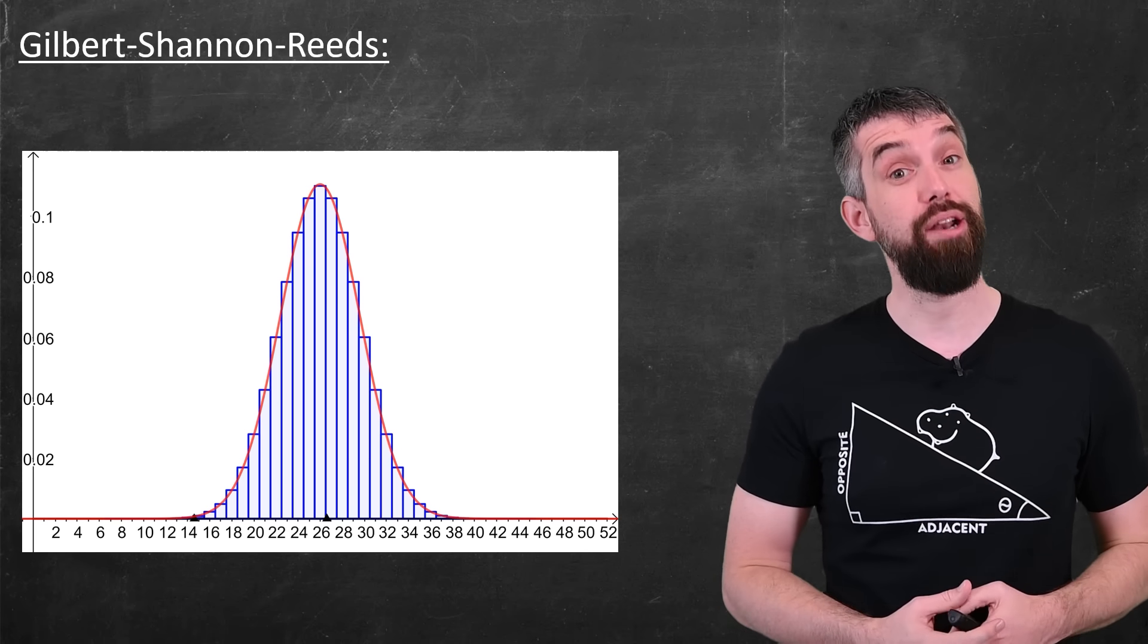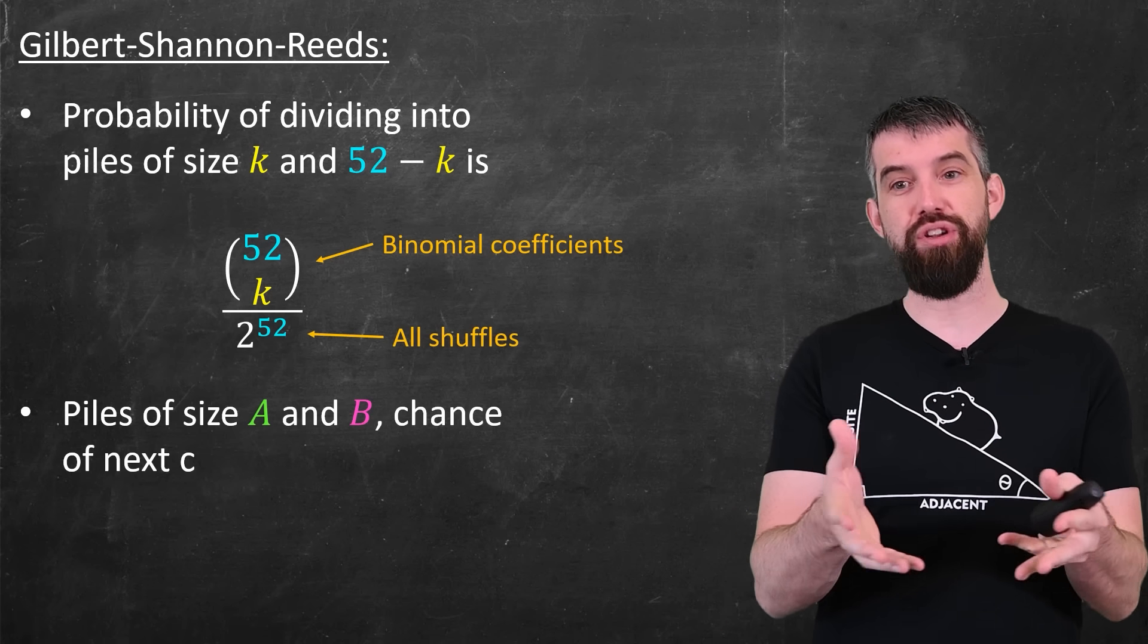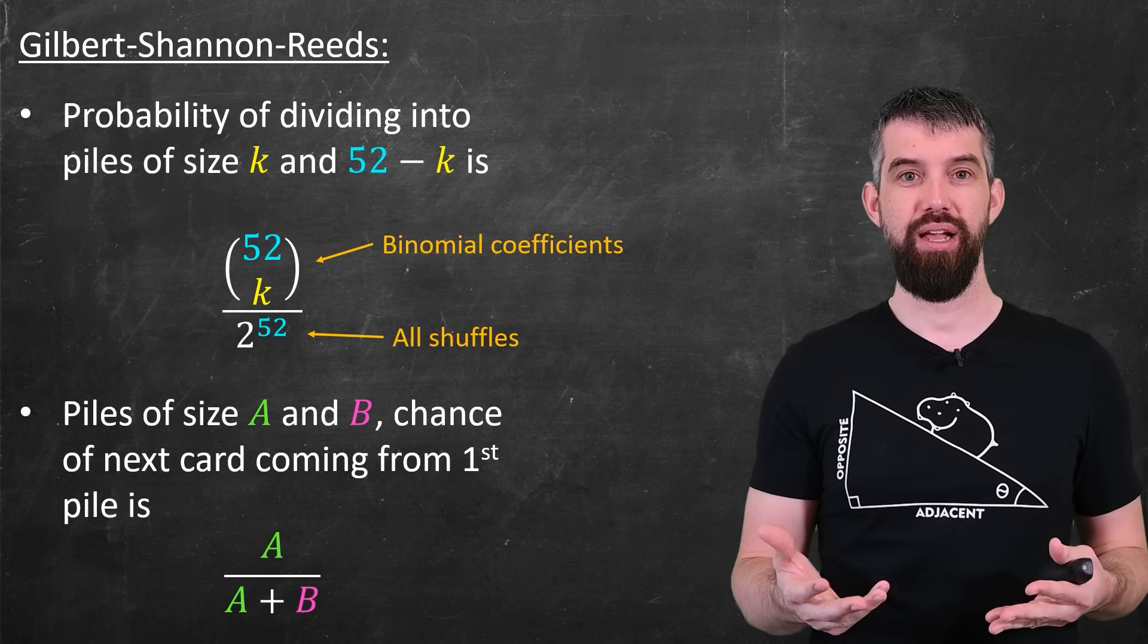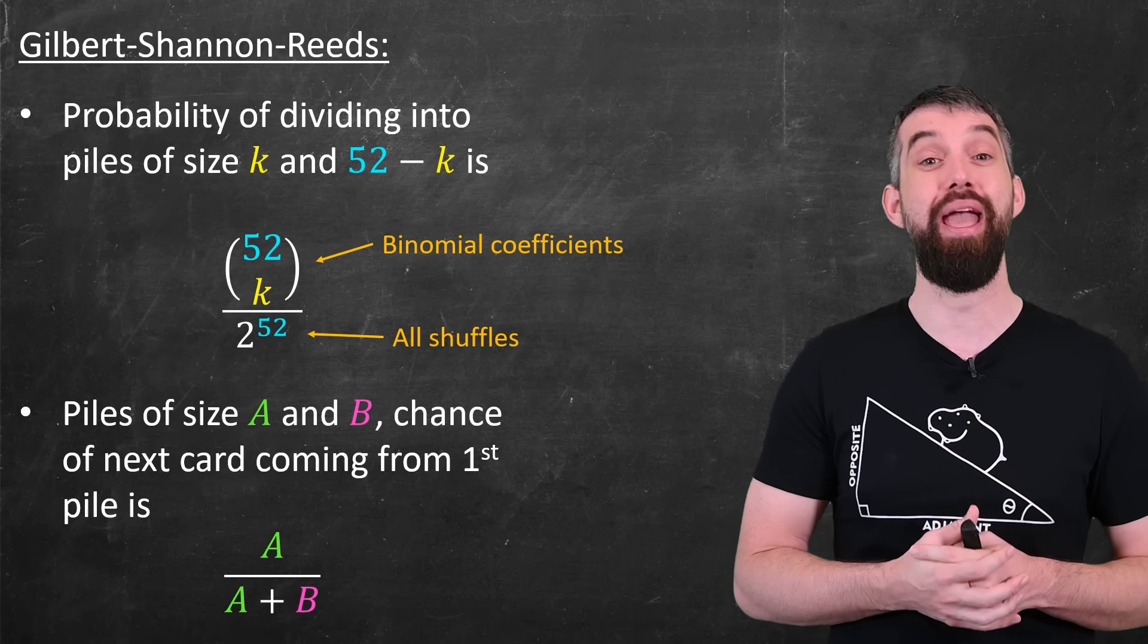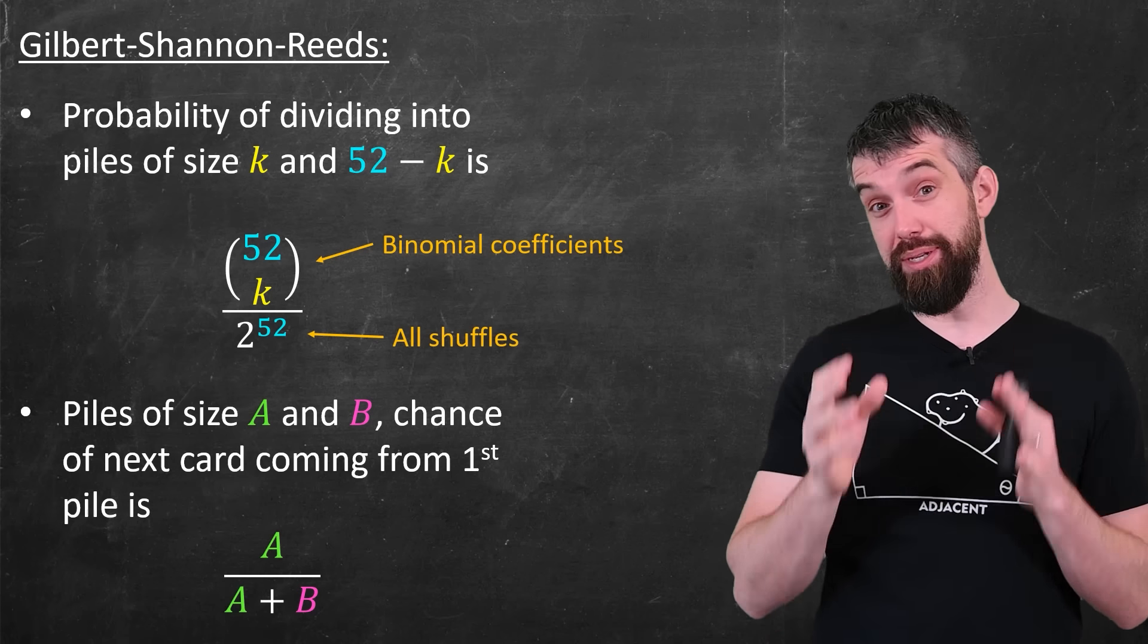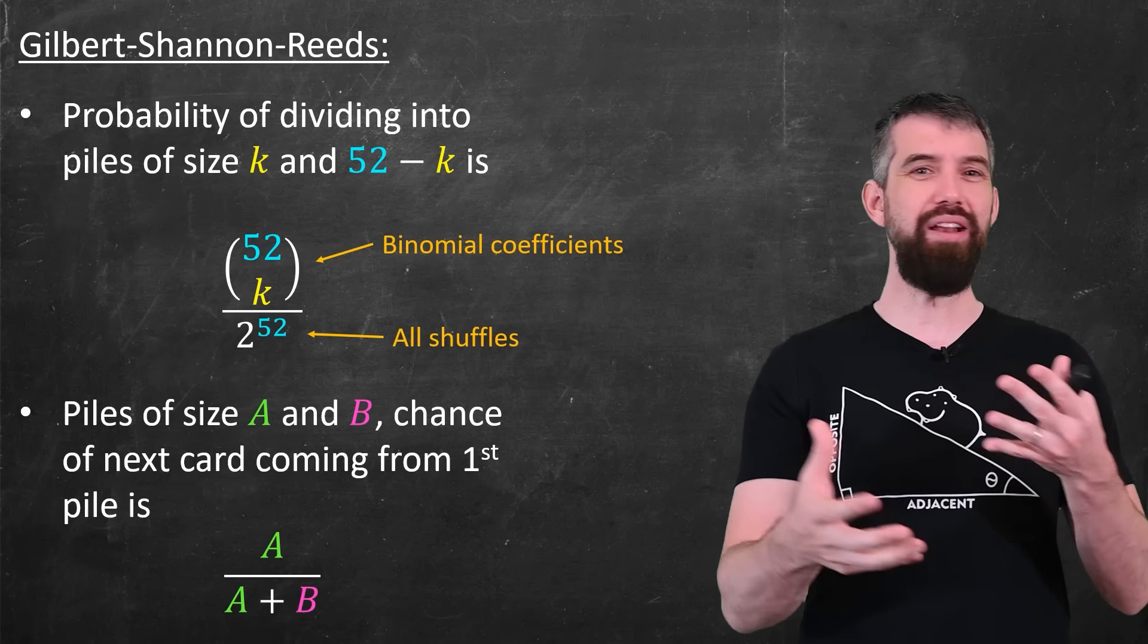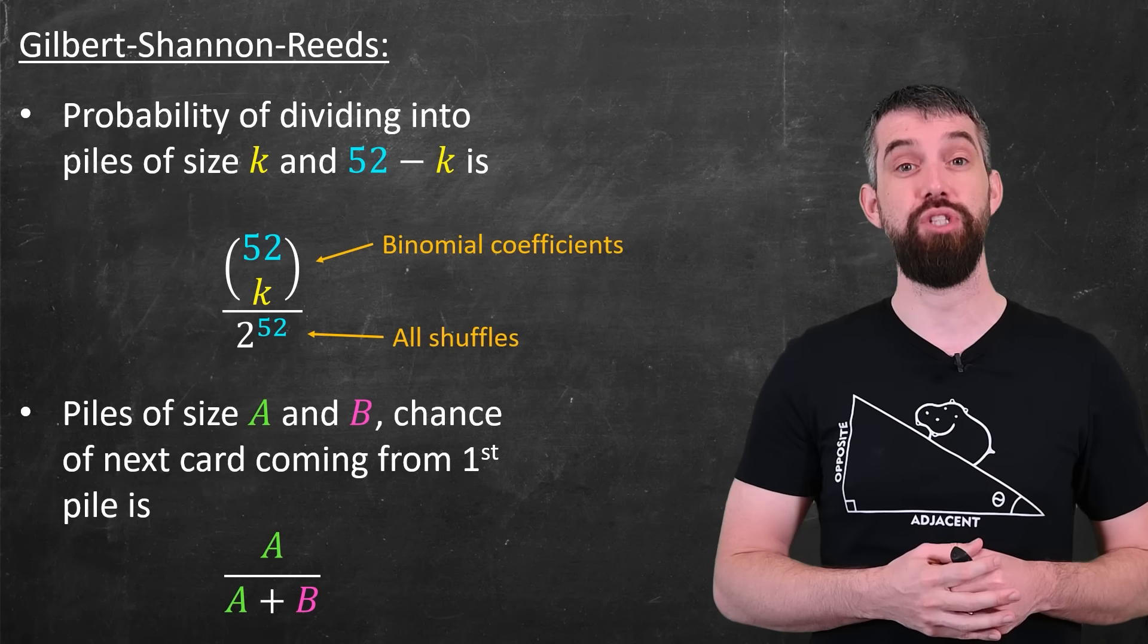Nevertheless, this is the distribution that I'm going to assume applies. And the second component of the Gilbert Shannon-Reeds model is that after you do your cuts, then you're trying to do your riffle. And if at any point you have piles of size A and B remaining, it's just a proportionality. The chance of coming from the pile with A cards would just be A over the total number A plus B. It's proportional. So let's use this model, and in particular this idea that all ways in which you could do a cut and then a shuffle are equally likely to try and figure out some probabilities when it comes to dealing with shuffles.